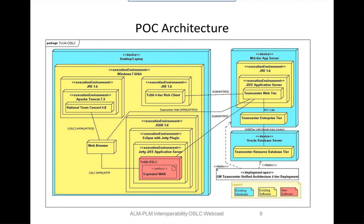This is an architecture diagram of the way that we identified or built this proof of concept. It's based mostly on how the LEO code was originally constructed and how we chose to implement this in a very rapid, agile way. So it's not built in a way that you would ever want to deploy this in a production environment.